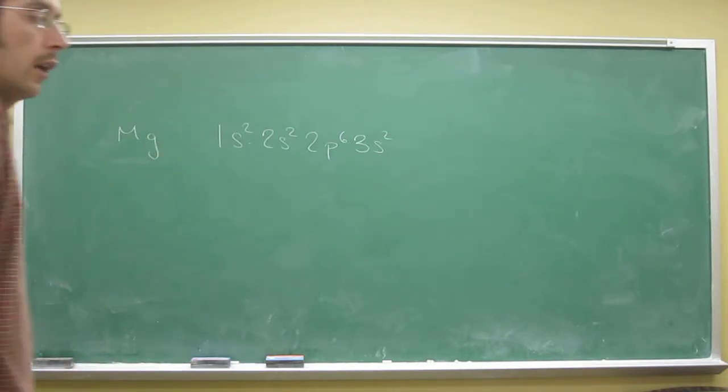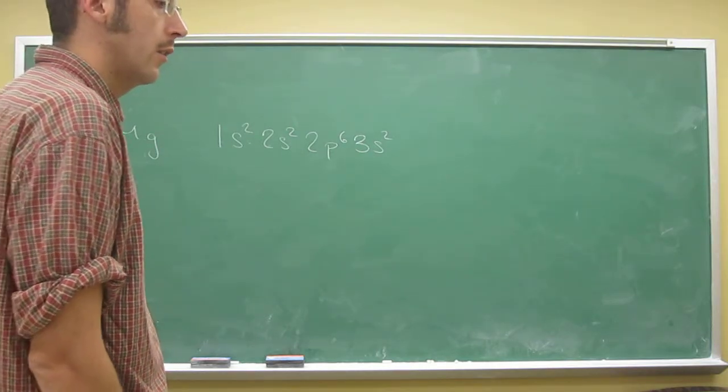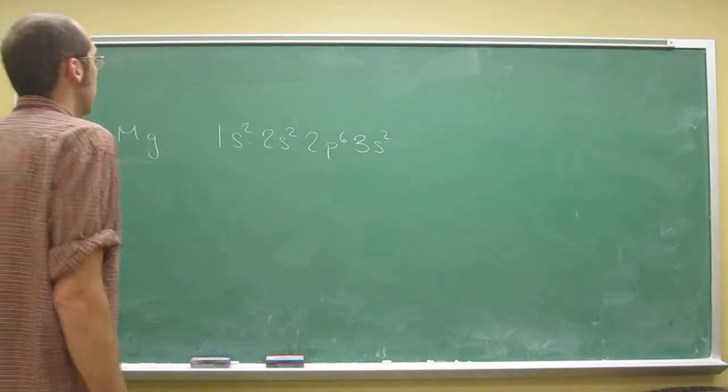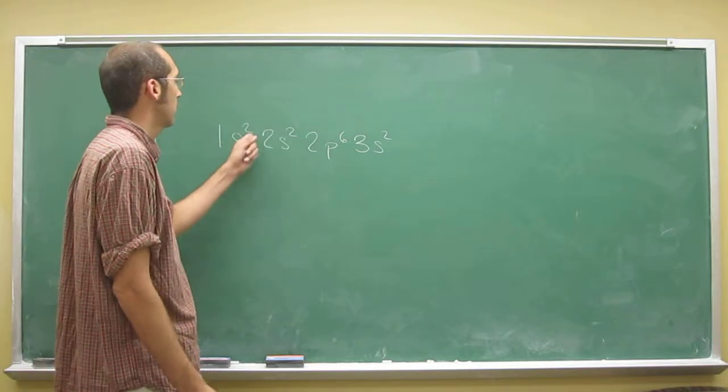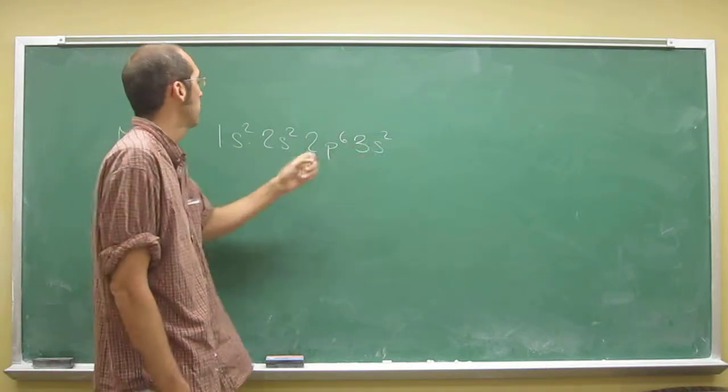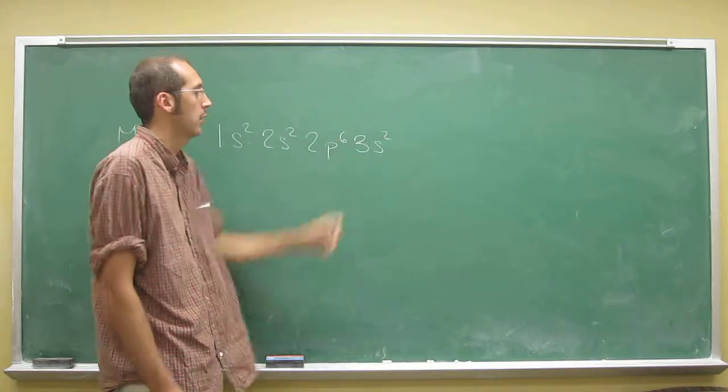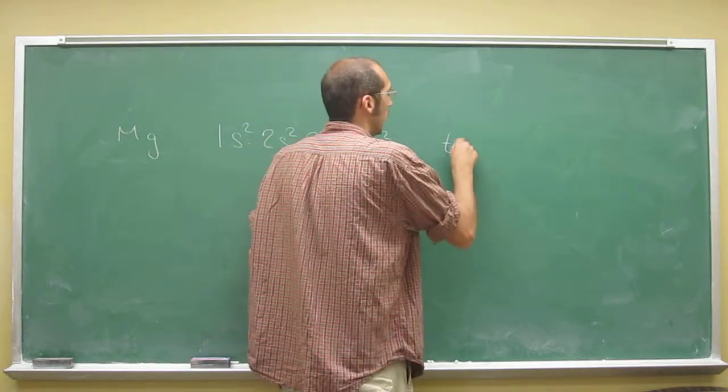So it says list the total number of electrons for magnesium. Total number of electrons, you just count these up: 6 plus 4, 10 plus 2. So total, 12.